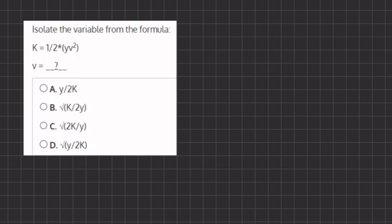In this problem we want to isolate the variable v from our formula. We're going to rewrite our formula as k equals y times v squared all over 2, which is the same thing as saying one half times this expression.